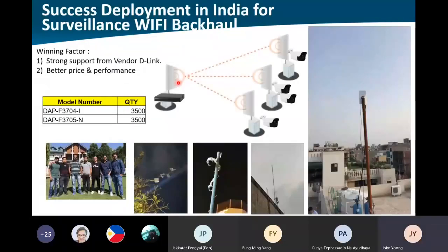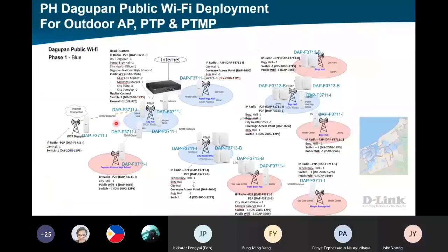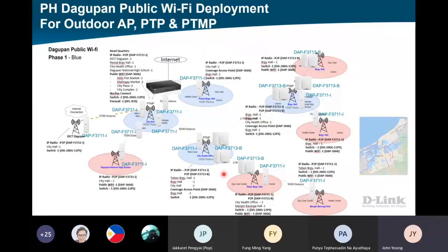We also have a success case in India where they use the AP to do PTMP for CCTV, mounted on buildings across the city to manage all the IP cameras. Next, in the Philippines, they have a project on PTP - you can see some areas like city halls are connected point-to-point. Then they do AP broadcasting using the DAP-3666. For the backhaul they use PTP, and for some areas they use PTMP - one AP to multiple points. For broadcasting, all use the DAP-3666.